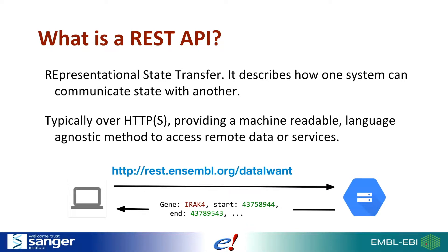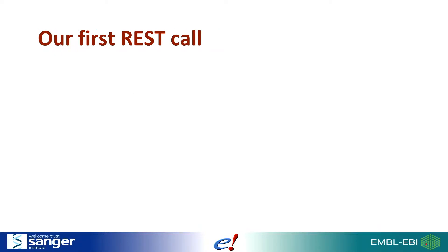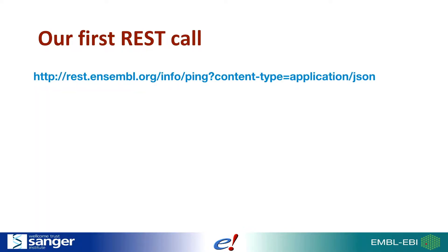So what is a REST API? It describes how one system can communicate with another, typically over HTTP or HTTPS, providing a machine-readable, language-agnostic method to access remote data and services. It also has the benefit of being human-readable because it uses the same protocol as your web browser. You can send a request with a URL and receive back formatted data responses. If we type in the URL for the ping endpoint on the Ensembl server, it's the same URL you could type into your browser or use in your software. And since it returns JSON-formatted data, it's easily readable by both software and humans.